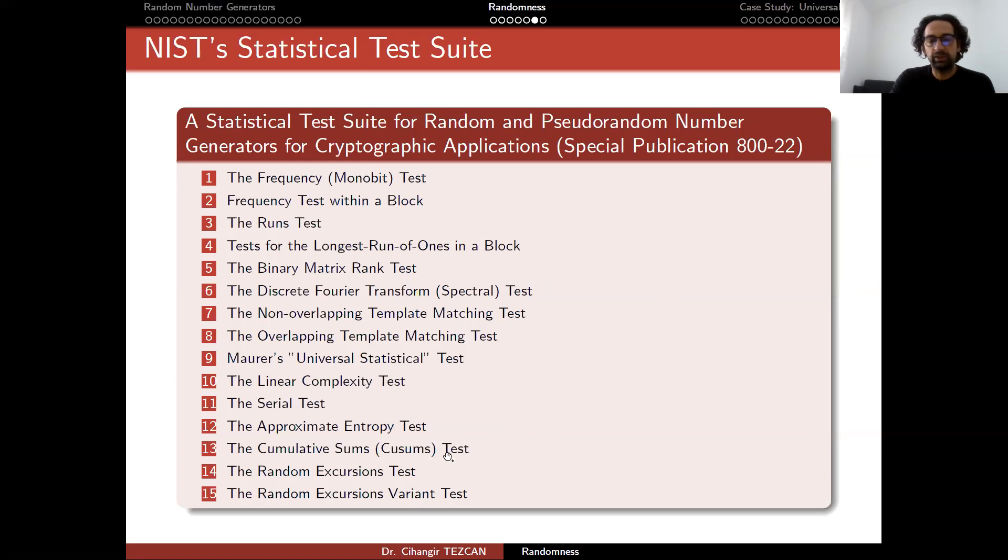So all of these tests try to check a different property of the random numbers and give you a result between zero and one. And you have to choose your p-value here. So p-value threshold here. For instance, the frequency test looks at the numbers of zeros and ones and look at the difference between these numbers and see, try to figure out if it is a reasonable amount or if it is really huge.